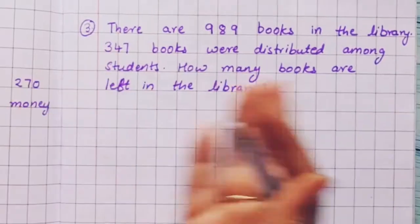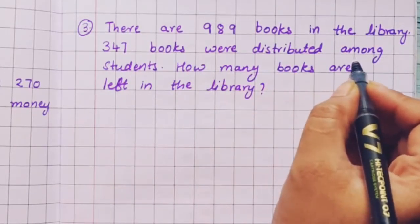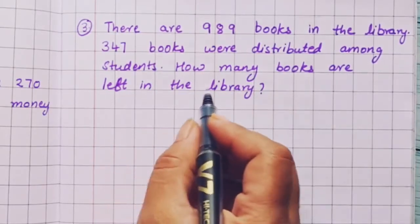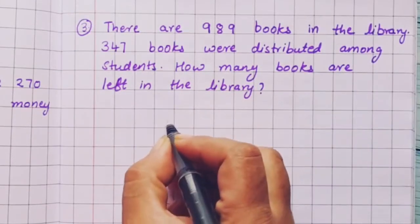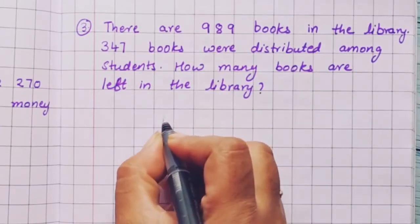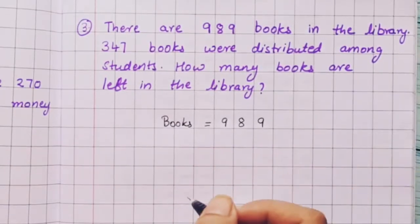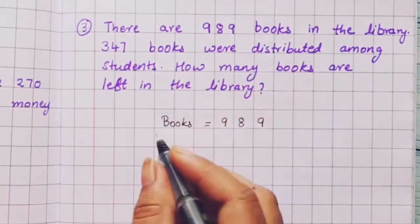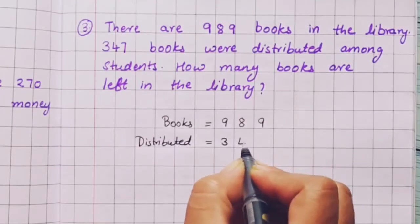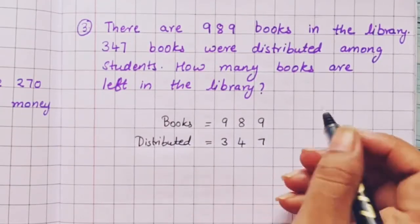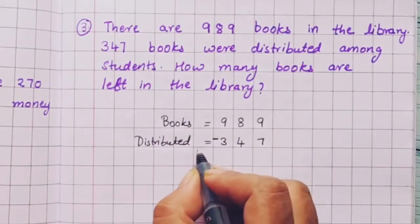Now let us do the next problem. There are 989 books in the library. 347 books were distributed among students. How many books are left in the library? Total number of books is 989. The books that were distributed is 347. 'Are left' means we have to do subtraction here.